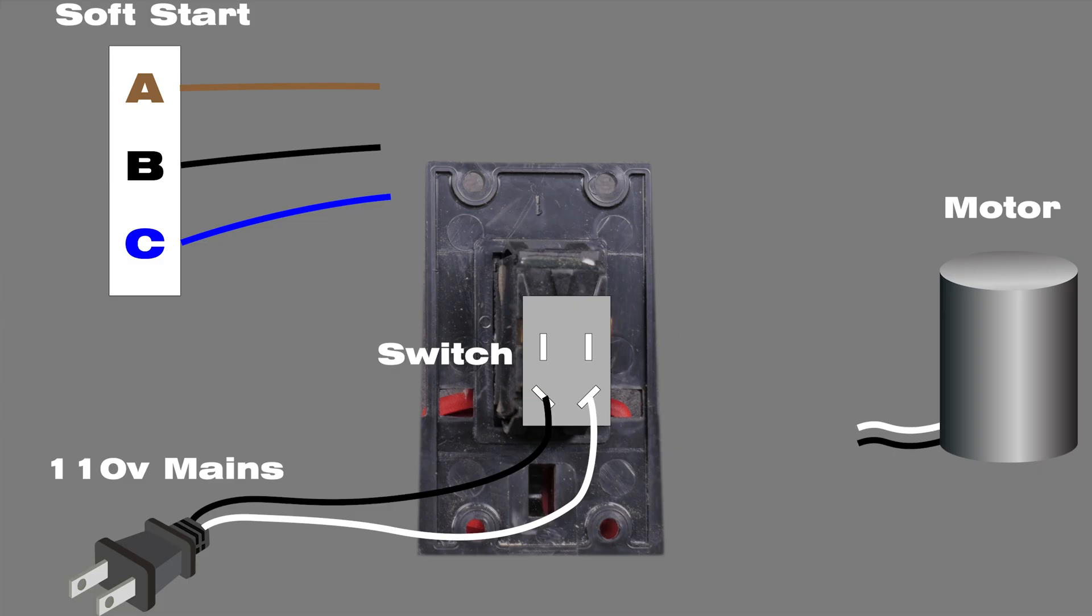The brown lead connects to the switch pole opposite the mains hot or black wire. The black lead connects directly to the hot or black lead on the motor. The blue lead connects to both the switch lug opposite mains neutral as well as the white neutral motor lead.